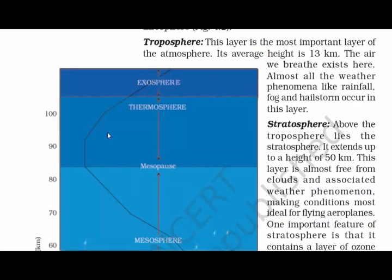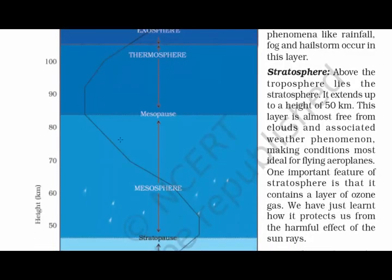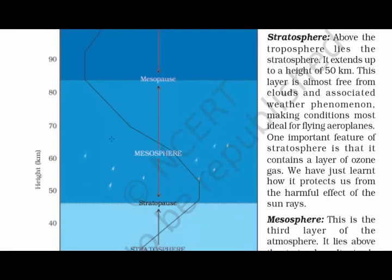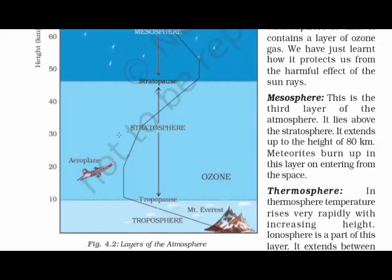The troposphere has a height of 13 km from the ground. It is the layer where oxygen exists, and rainfall, fog, and hailstorms occur in this layer. The stratosphere has a height of 50 km from the ground. Aeroplanes fly in this layer, and it also contains the layer of ozone gas, which protects us from the harmful effects of the sun's rays.